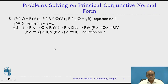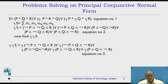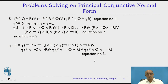To obtain principal conjunctive normal form, we have to take the negation of negation S. Negation of negation S, equation number 3, is formed by applying a negation to each minterm bracket in the summation — that is, negation of the first minterm (negation P and negation Q and R), then the second, third, fourth, and fifth minterms each with a negation applied.